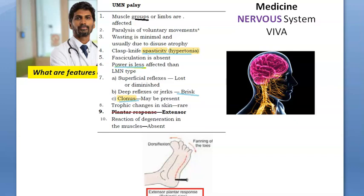There will be spasticity or hypertonia. Power will be reduced and deep reflexes will be brisk. Clonus may also be present. On doing the Babinski test, there is dorsiflexion — Babinski positive.